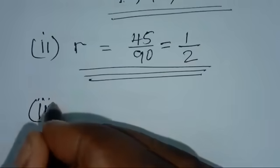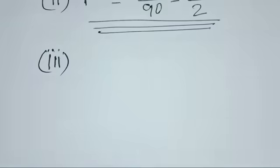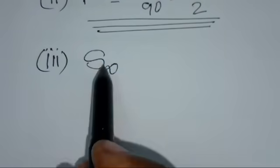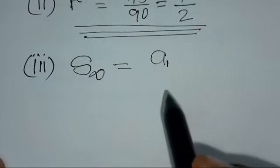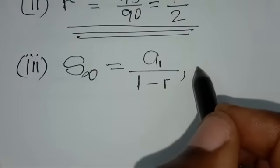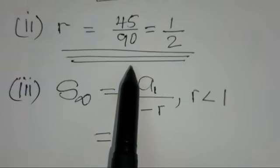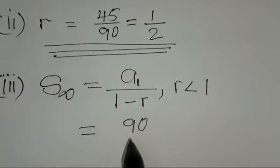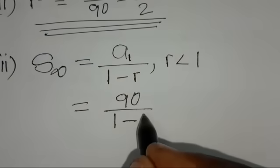The third part asks for the sum to infinity. The formula is S∞ equals a1 divided by (1 minus R), and this formula is valid when R is less than 1. We use the first term 90, and R is 1/2, so we have 90 divided by (1 minus 1/2).